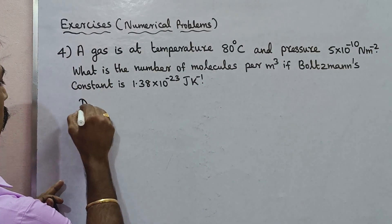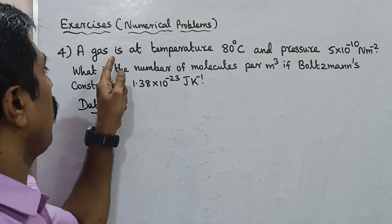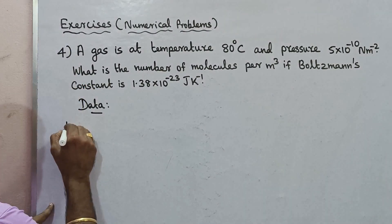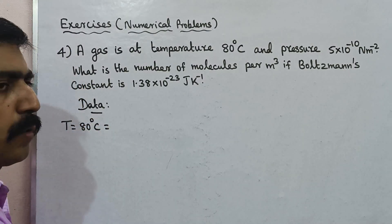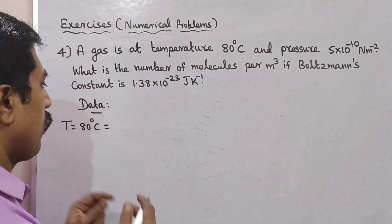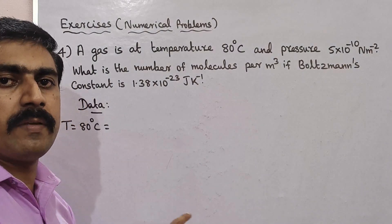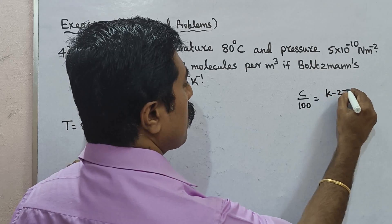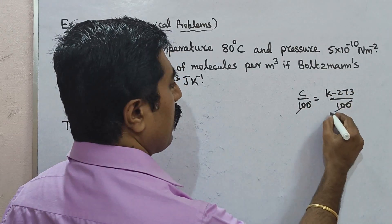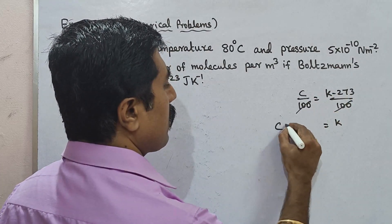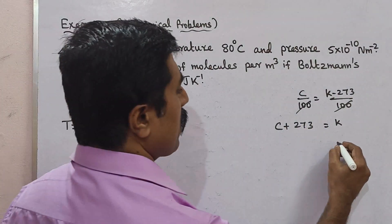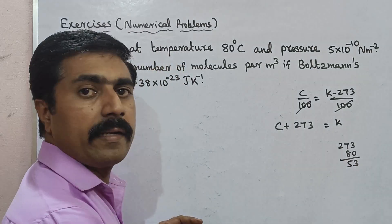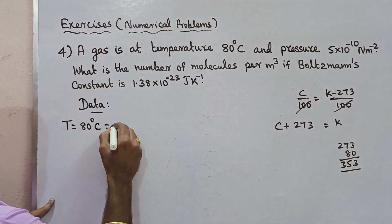From the data given: gas is at temperature T equal to 80 degrees Celsius. If you look at the conversion, Kelvin is equal to Celsius plus 273. So 80 plus 273 — 7 plus 8 is equal to 15, carry 1, remaining 1 plus 2 is equal to 3. So T equals 353 Kelvin.